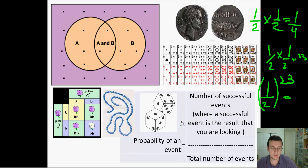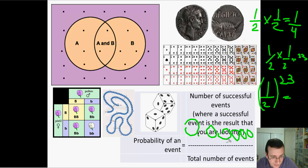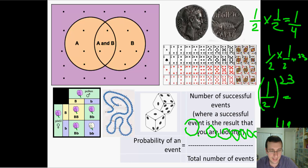That is an incredibly small number — approximately 0.0000019, or about 1.19 times 10 to the negative 7 in scientific notation. It is ridiculously small.